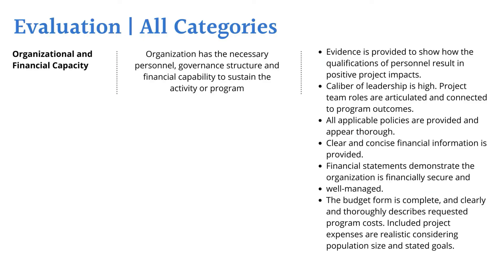Now we're going to briefly walk through the evaluation criteria and scoring. The evaluation criteria has been available for public viewing for a few months now, so we won't spend too much time discussing it. However, we did want to provide some further detail on response expectations. Let's start with organizational and financial capacity, an evaluation category that exists across all four community elements. The next series of slides provides information on each evaluation category, area of focus, and response expectations for all of the community elements and corresponding evaluation criteria.